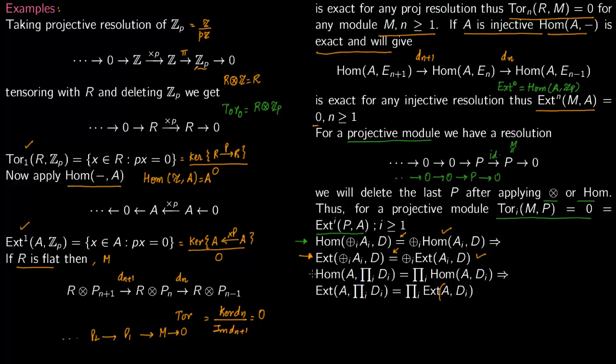So since there is equality here, there will be equality here. Similarly, this property: corresponding to this functor, we have this derived functor. Corresponding to this, we have this derived functor. Equality here implies the equality right here. So notice that, for example, here you can say you are using the functor.